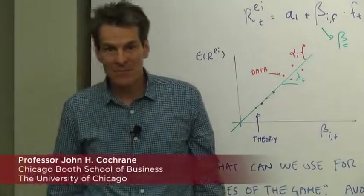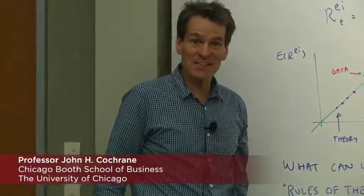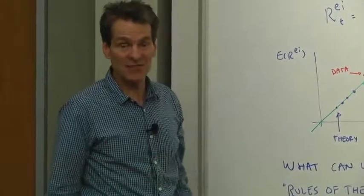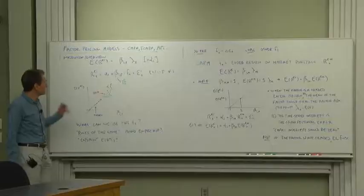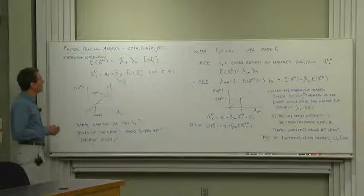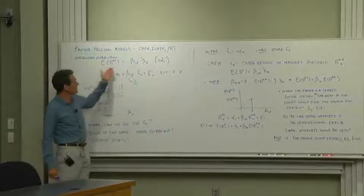Today we're going to look at asset pricing models: the CAPM, the ICAPM, the APT, and multi-factor models. These are the ones used in practice for a lot of purposes. We're going to look at expected excess returns. The form of all these models is expected excess return is proportional to beta with factor risk premium.